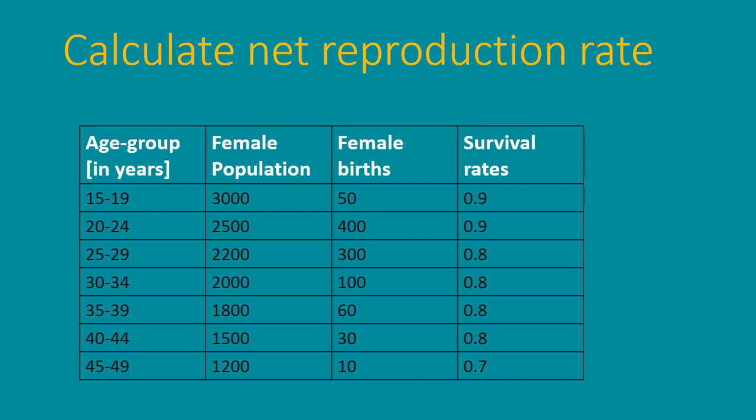The survival rate is 0.9 for the 15 to 19 age group, who are at child-bearing age. Each age group has its own survival rate — 0.9, 0.8, 0.7, and so on for successive groups.